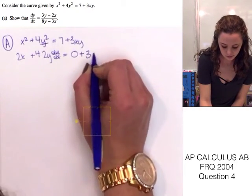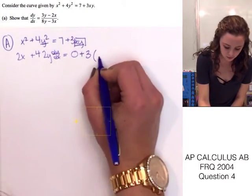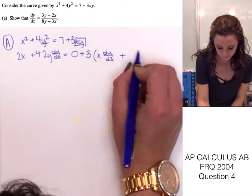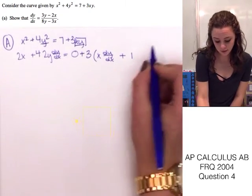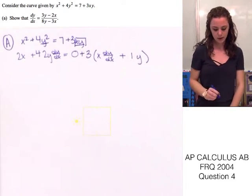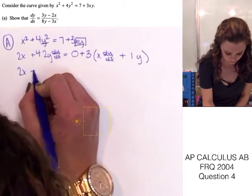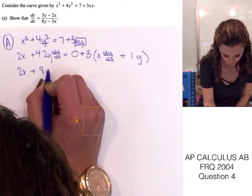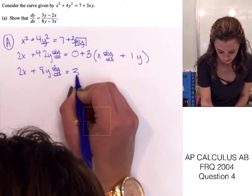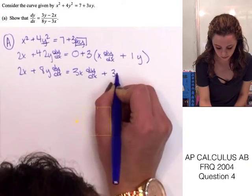That will be 2y dy dx is equal to 0 because the derivative of a constant is always 0. Plus, we're going to leave 3 out and just find the derivative of this using the product rule. So, x times dy dx plus the derivative of x, which is 1, times y. So, now let's go ahead and simplify this function.